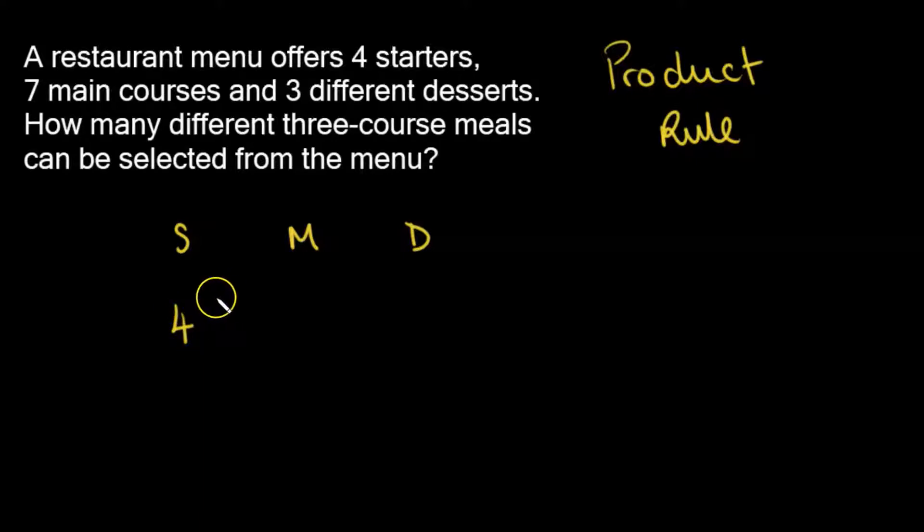I can pick from four different dishes for my starter. And then moving on to my main course. Well, after picking my starter, I again have seven choices now for main courses. And now for desserts, how many possibilities? Three. What I do with these numbers is I multiply them together in order to figure out the total number of combinations.